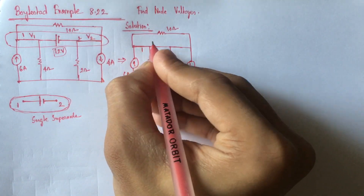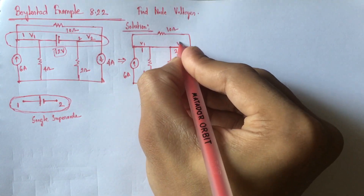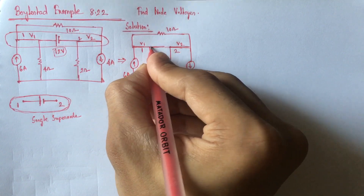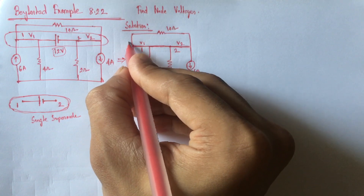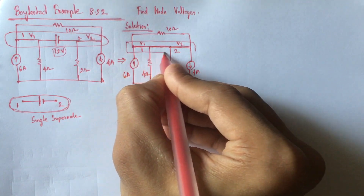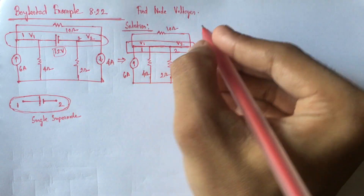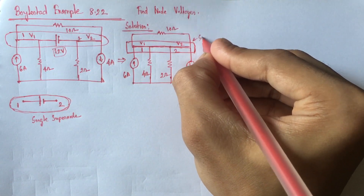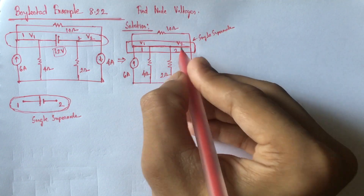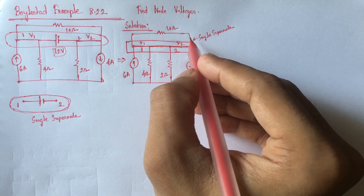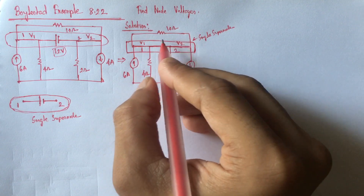This is node 1 with voltage V1 and this is node 2 with voltage V2. At this point we have replaced the 12 volt source by a short circuit. So, here we see that this node is a super node — a single super node. For solving the circuit, we can simply assume that this is a single node.